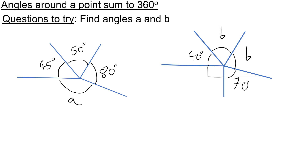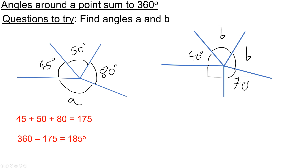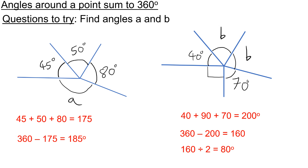We want to find angles A and B here, so please pause the video now and have a go. And when you're ready for the answers, press play. Here are the answers: A should be 185 degrees, and B should be 80 degrees.